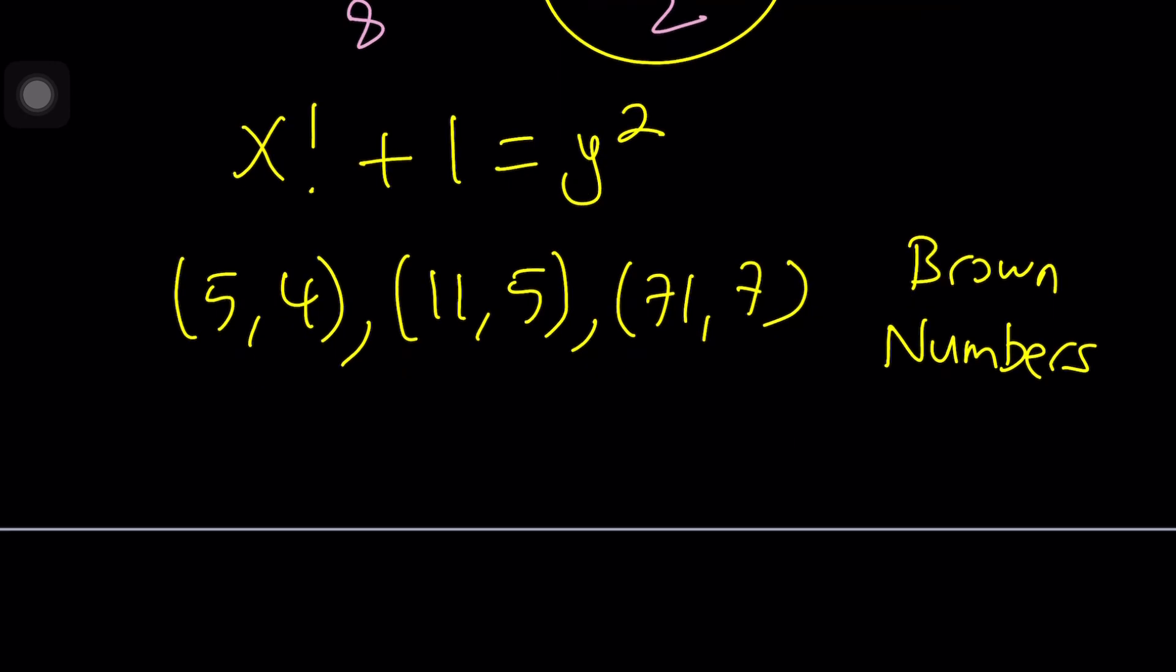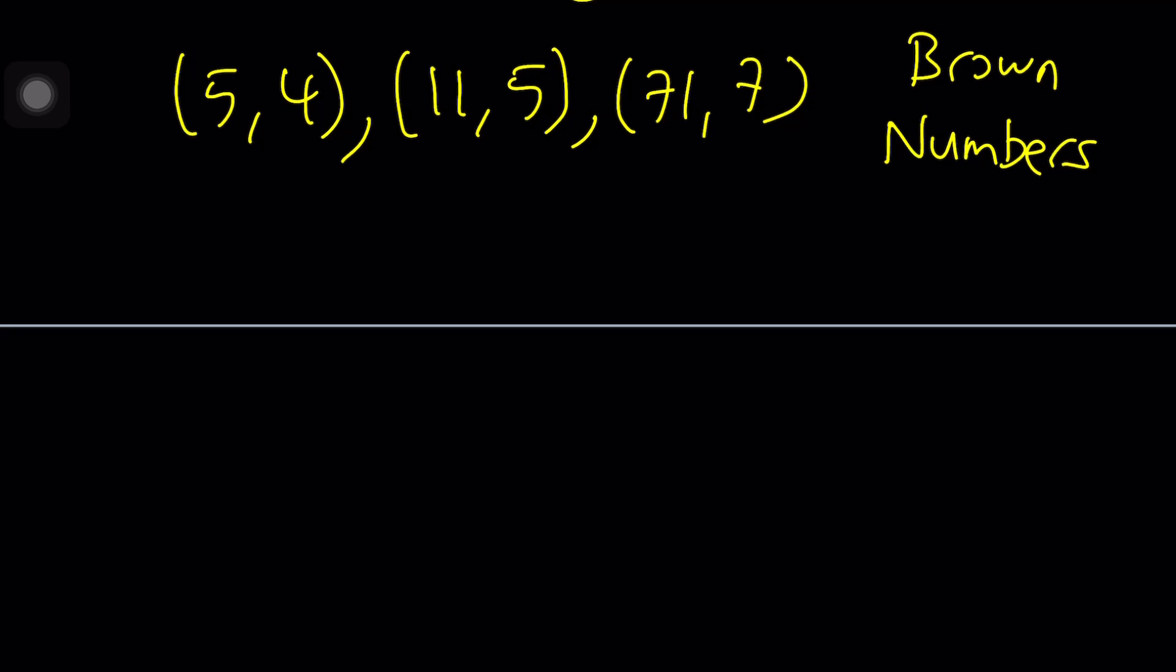There's also another conjecture that implies something similar which is called the ABC conjecture. The ABC conjecture actually implies that n factorial plus a equals k squared has only finitely many solutions for any given integer a.